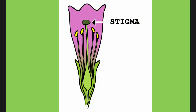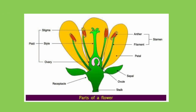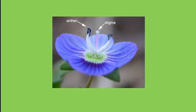We're going to start with the female parts of the plant, and the first thing we're going to talk about is the stigma and its function. You can see the stigma here — it's the little blob on the end. You can see it in the context of the whole flower here, including on a real one.